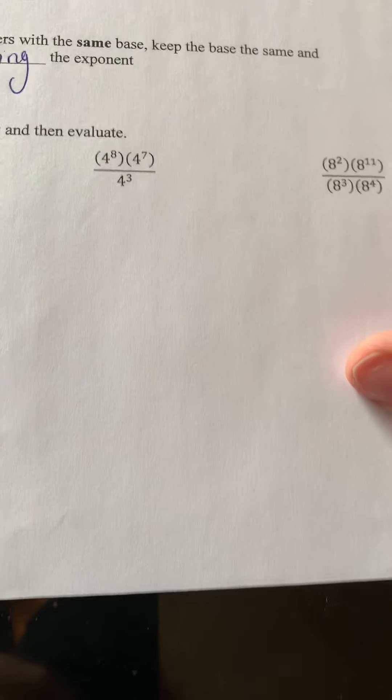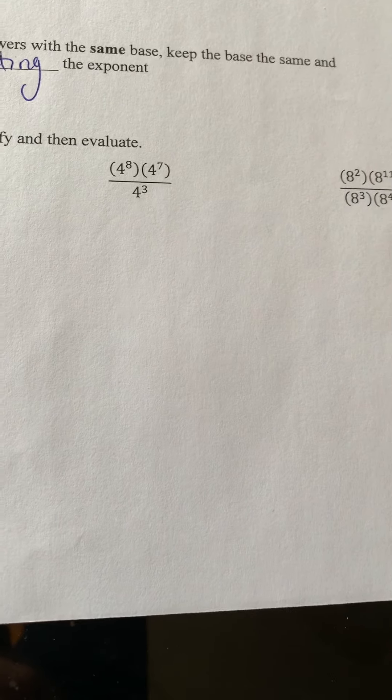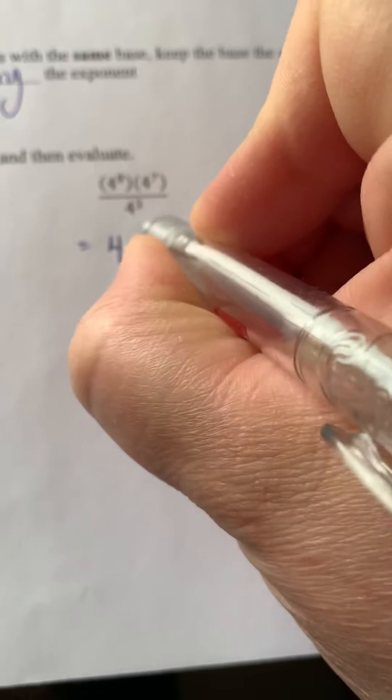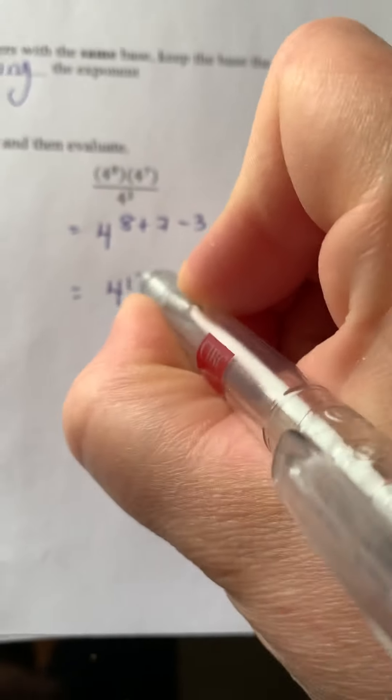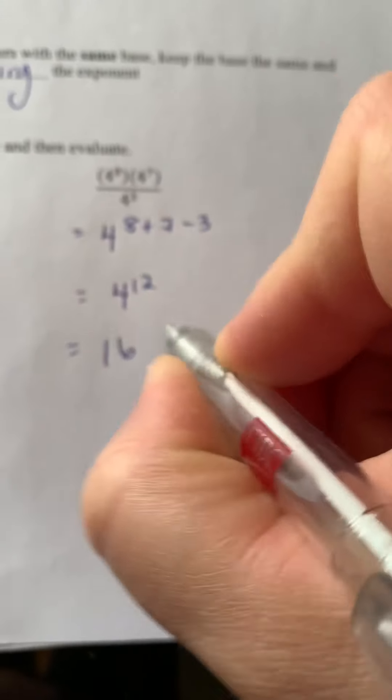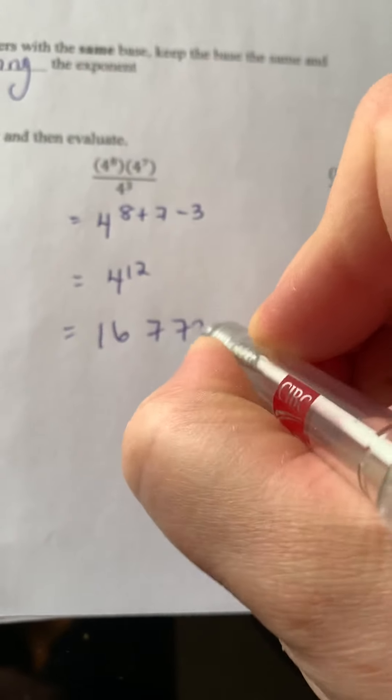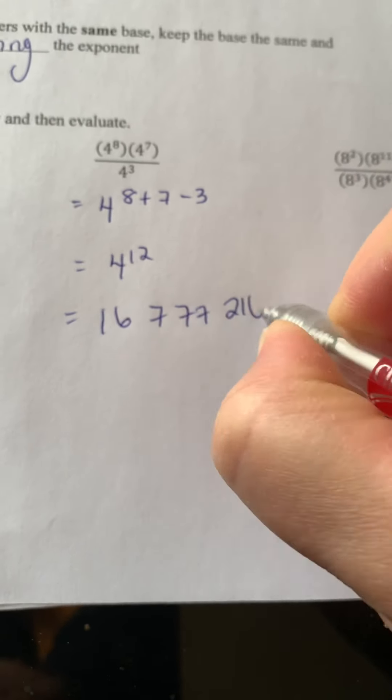So here we go, guys. I've got a mix of multiplication and division. So what I'm going to do is say 4 to the power of 8 plus 7 minus 3. So that works out to be 4 to the power of 12. So we're talking 16,777,216.